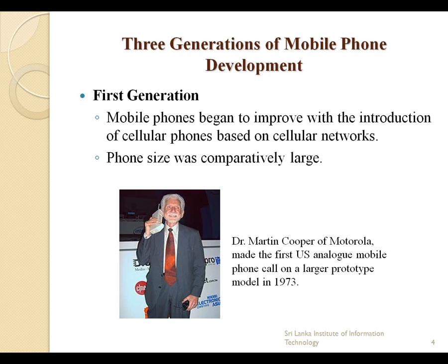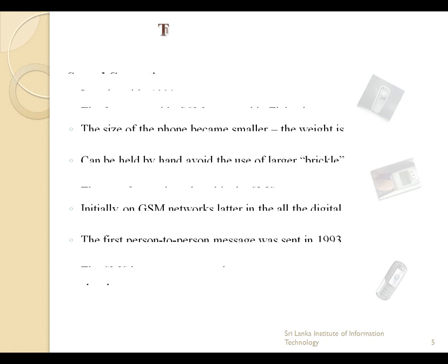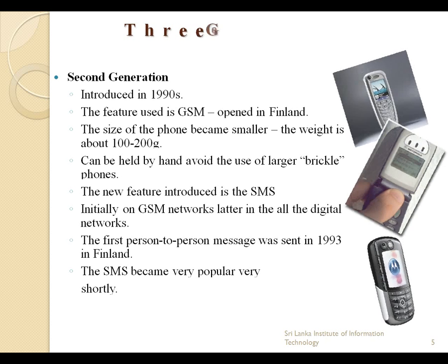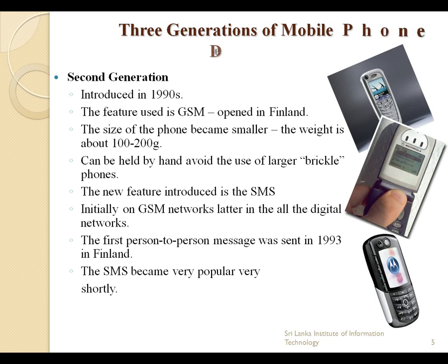Let's move to the second generation of mobile phones. The second generation started in 1990. The feature used in second generation mobile phones is GSM, that is Global System for Mobile Communication. New releases of GSM are GPRS — General Packet Radio Service, released in 1997 — and EDGE, Enhanced Data Rate for GSM Evolution. In the second generation, the size of the phone was reduced, weighing about 100 to 200 grams. This was possible due to technology improvements such as advanced batteries and more energy-efficient electronics.